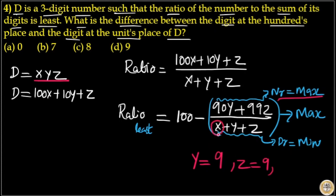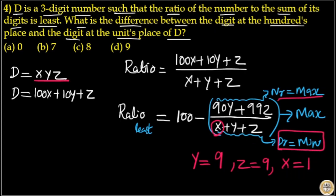What is left is X. In the denominator, we need to make it minimum. We have already given Y and Z their maximum values. So for X, I will put the minimum value. We cannot put X equal to 0 because D is a three-digit number. So the minimum value for X is 1. Therefore, X equals 1, Y equals 9, and Z equals 9.